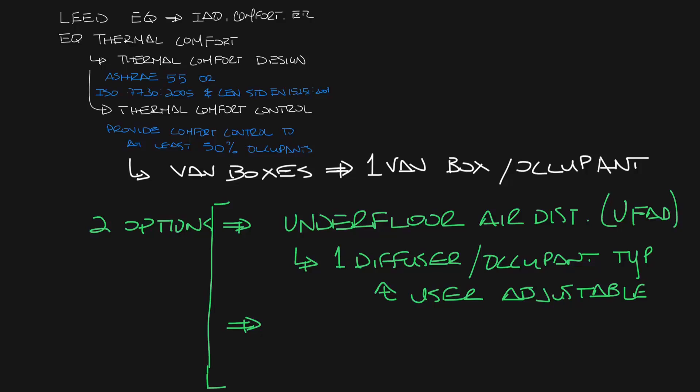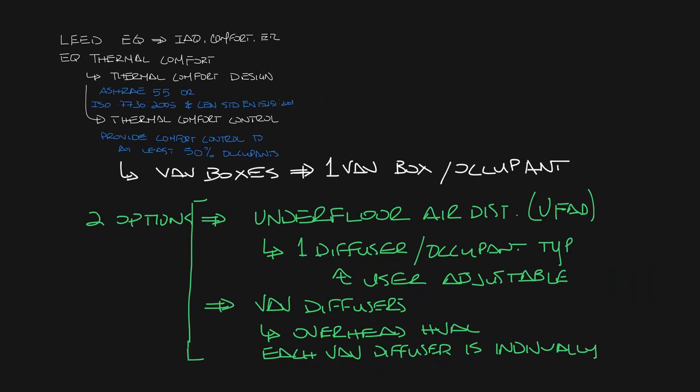Another option is to use VAV diffusers. This allows you to do a typical overhead HVAC system, but instead of VAV boxes serving several zones, you would use VAV diffusers. And then each VAV diffuser is individually adjustable, so you can give 50% of your occupants Thermal Comfort Control.